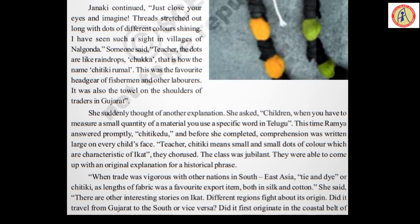When trade was vigorous with other nations in Southeast Asia, tie and dye or Chitiki as a length of fabric was a favorite export item, both in silk and cotton. This business was very vigorous — very active — during those days in Southeast Asia. It could be called tie and dye or Chitiki, and the length of the fabric was a favorite export item, in either silk or cotton.